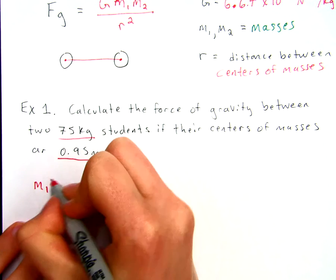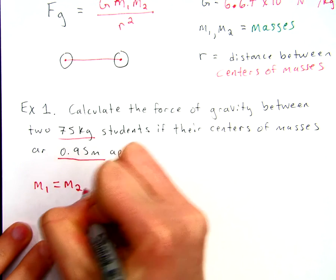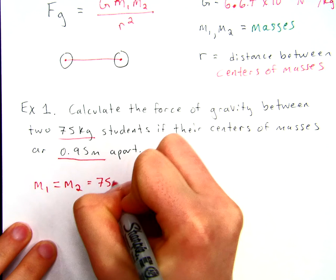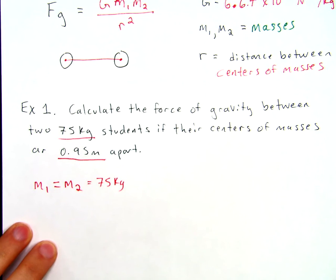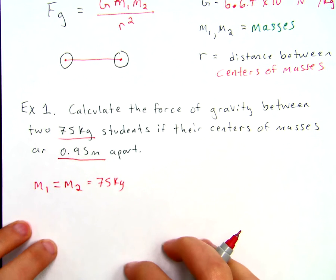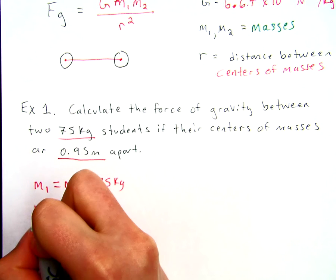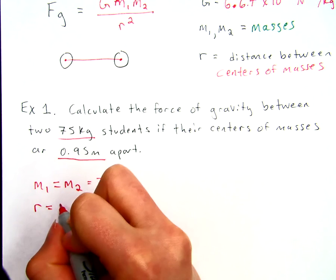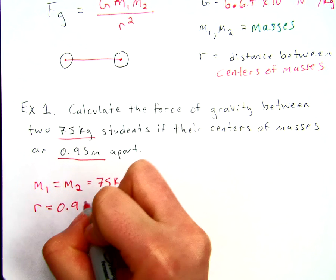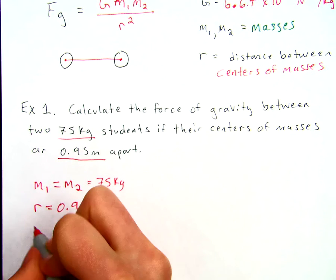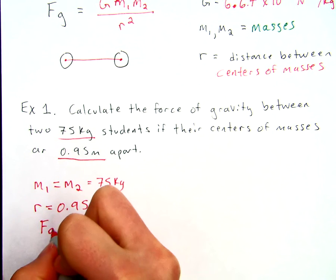In this question, we're going to look at two students. They are two 75 kilogram students, and their center of masses are 0.95 meters apart. In this case, mass one is equal to mass two, and they're both 75 kilograms. We're looking at the distance between the two students, and that's 0.95 meters. We're going to look for force of gravity.